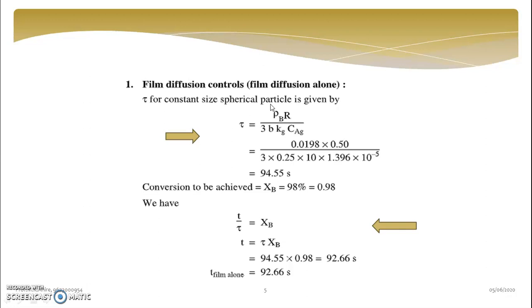So T by tau is XB, that is exclusively the relationship for spherical particle with film diffusion control. So we have estimated value of tau 94.55, we are having value of XB as 0.98, so T will be 92.66. Just you have to cross multiply tau with XB and you will get value of T.